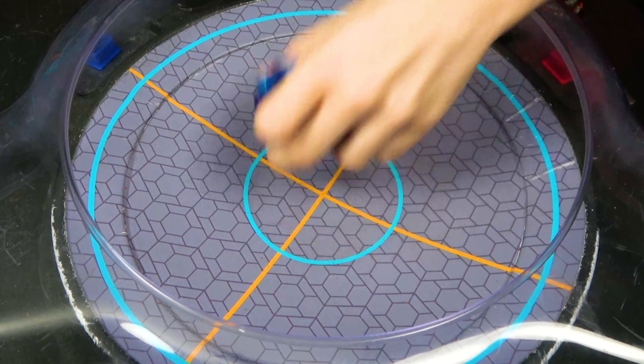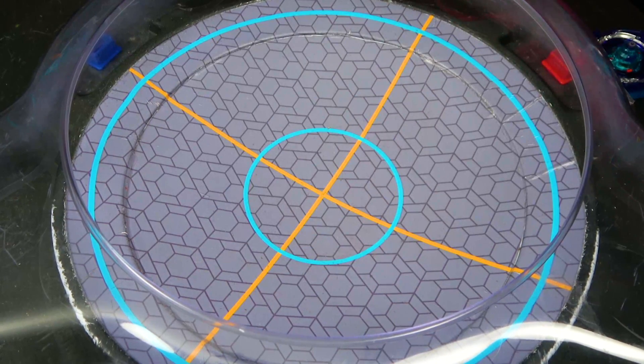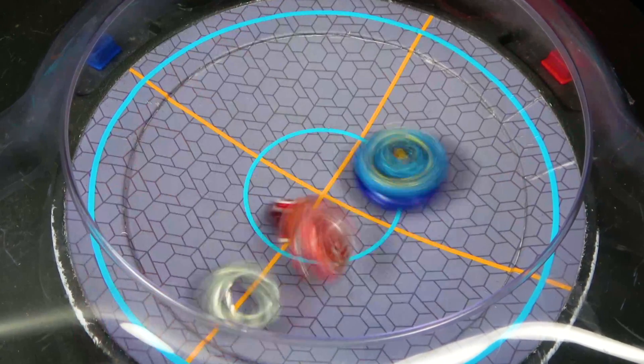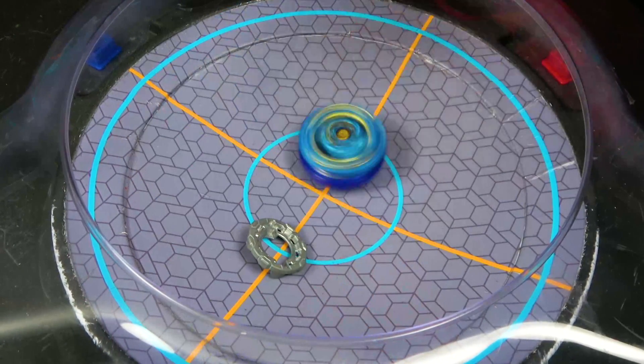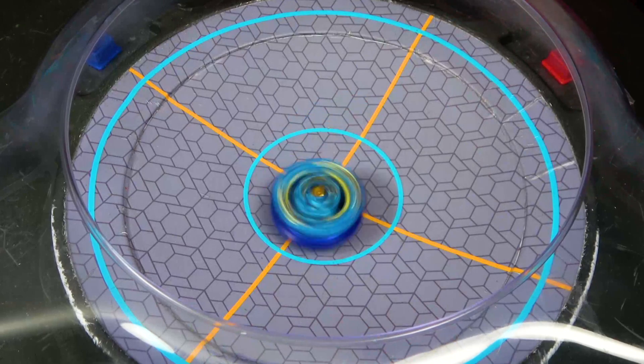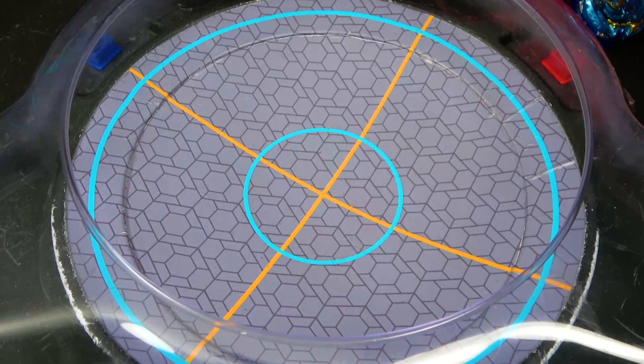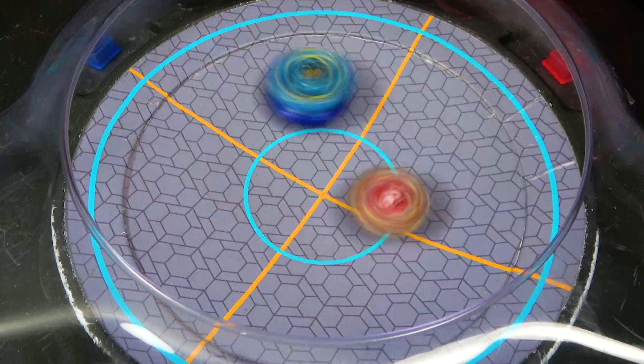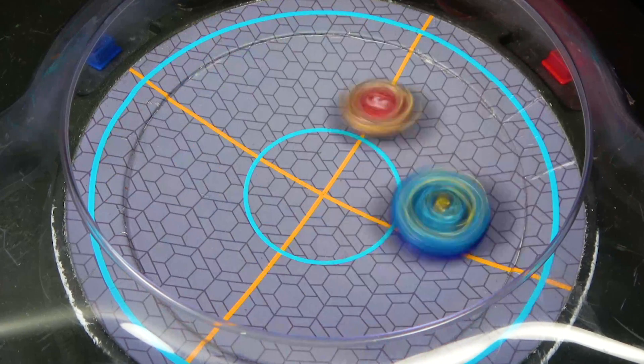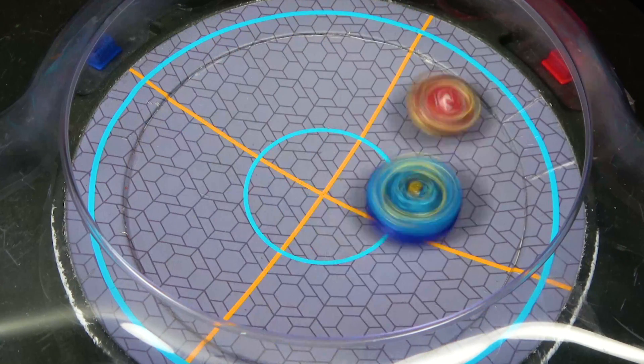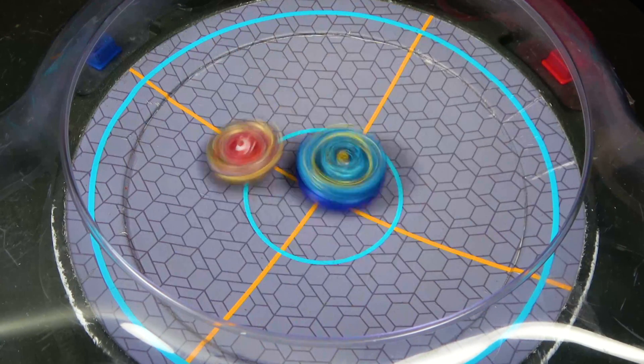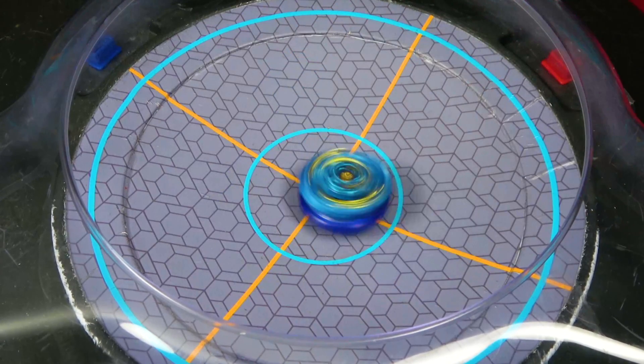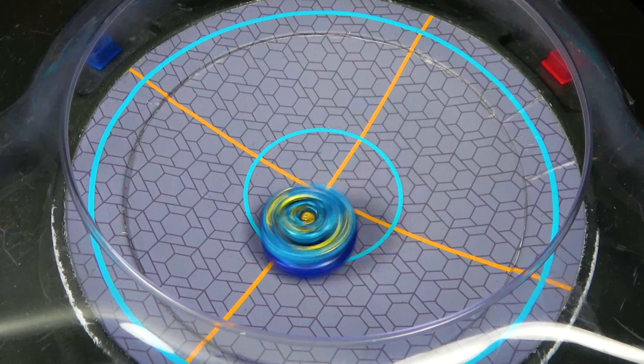Next up we are going to do Storm Spriggan. Defeated right away. Storm Spriggan kind of dodging. Yeah, Hasbro ones, dual layers, usually they don't burst too much. Storm is now completed.